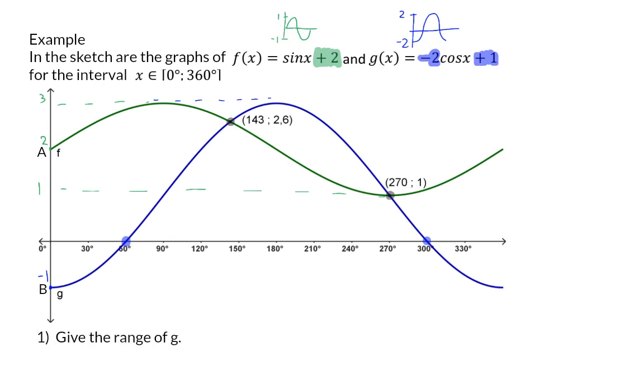Question 1: Give the range of G. The range is all the y-values, which means you read from bottom to top. The minimum value of graph G is at minus 1 and its maximum is at 3, which means the range will be all the y-values from minus 1 up to 3, with minus 1 and 3 included.